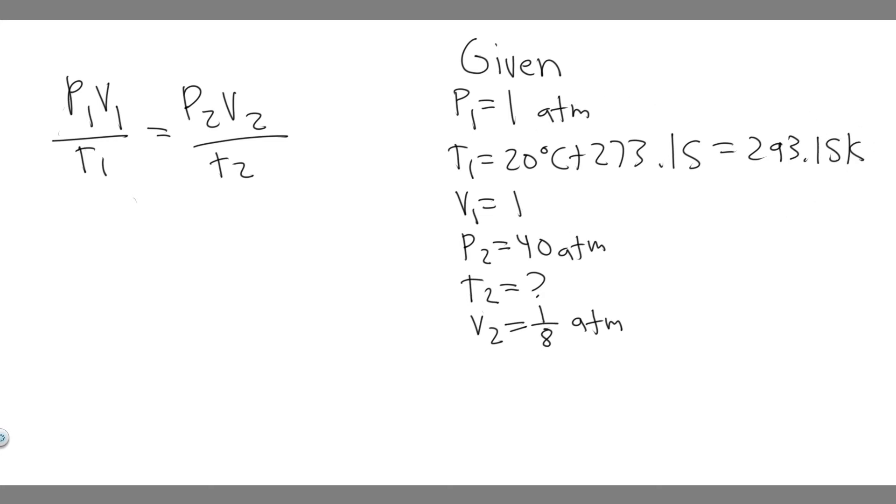And then the hard part about this problem is they tell you that it's compressed to one-eighth of its original volume. So the way you want to pretend how this works is you can set V1 to any number, but you just got to make sure the second part is set to one-eighth of that. So we're going to say V1 equals 1. This is the wrong units, this is for pressure, I just wrote it accidentally.